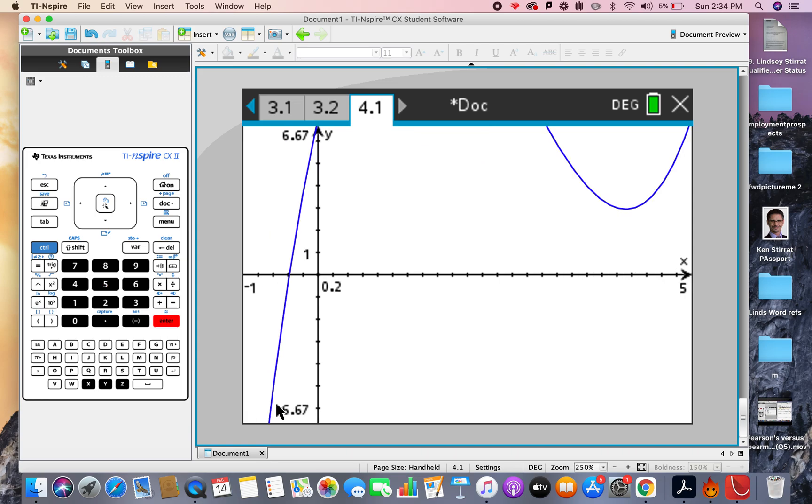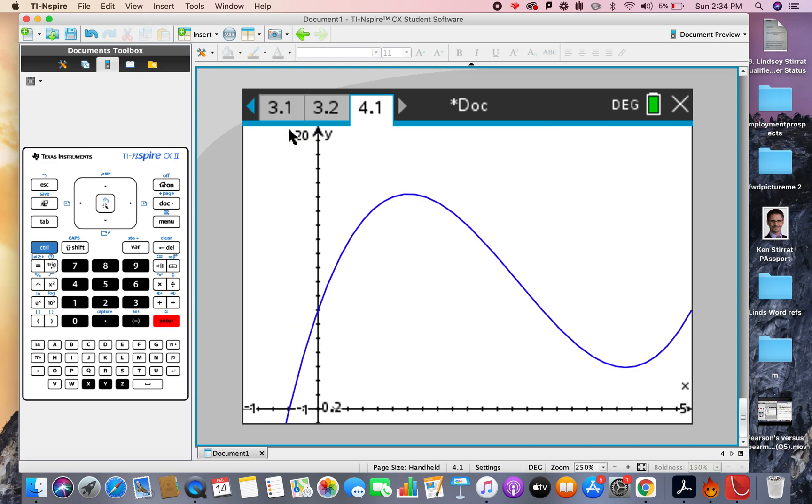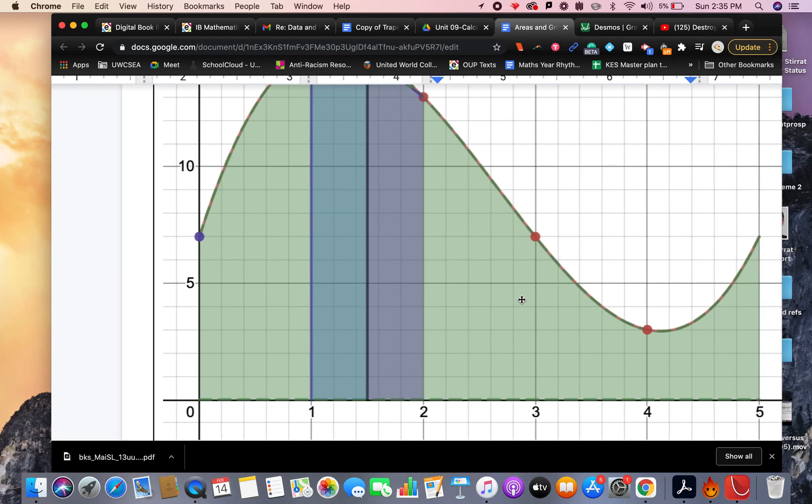And over here, I'll do the same thing, negative 1, and was it 20? Can't quite remember. Okay, that looks pretty good, right? So now we've got the same sort of picture here, that we have for Hypatia's Garden.